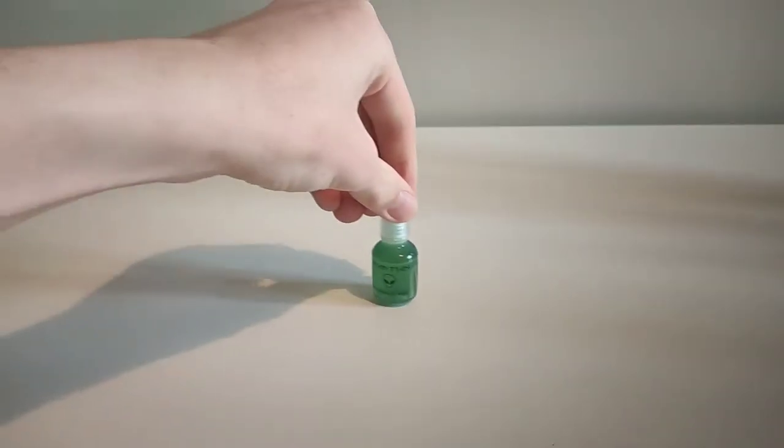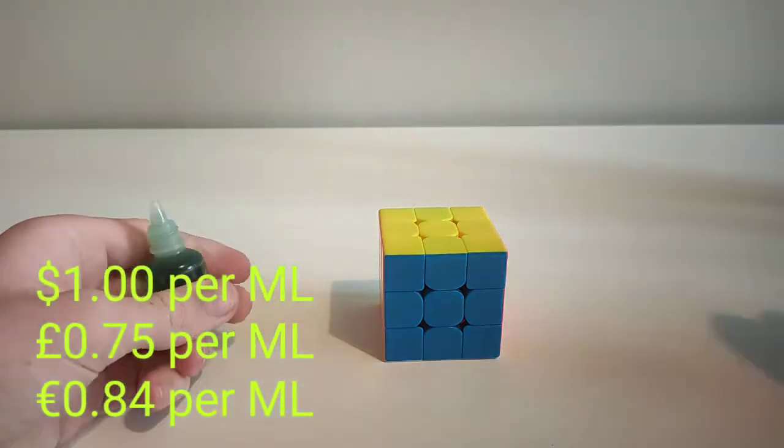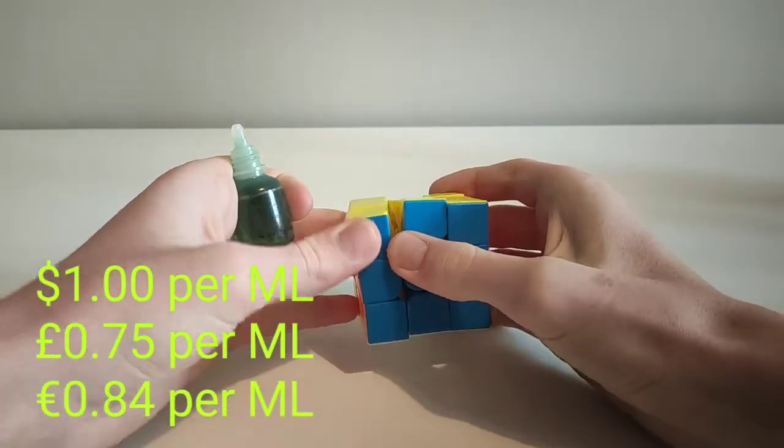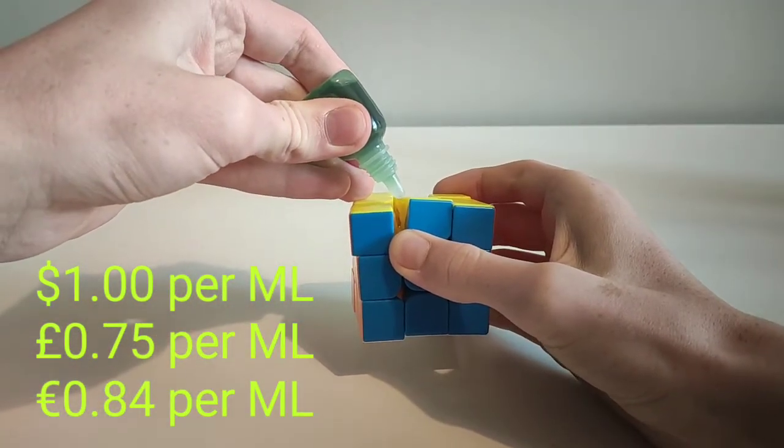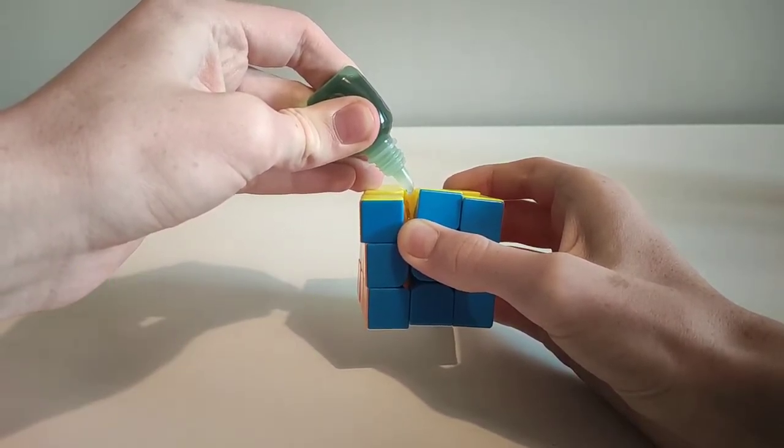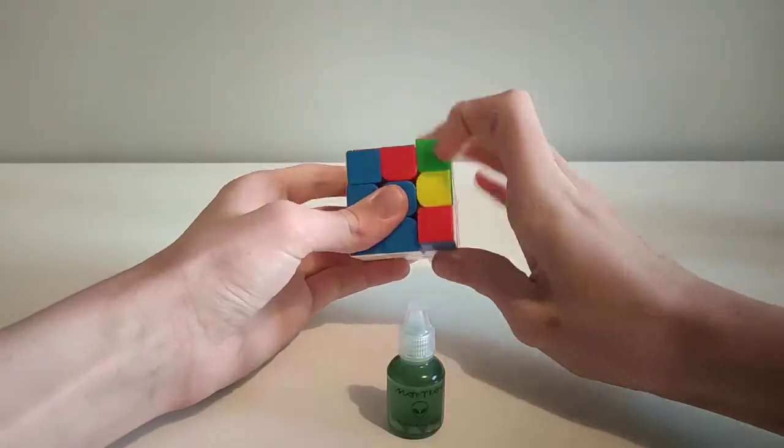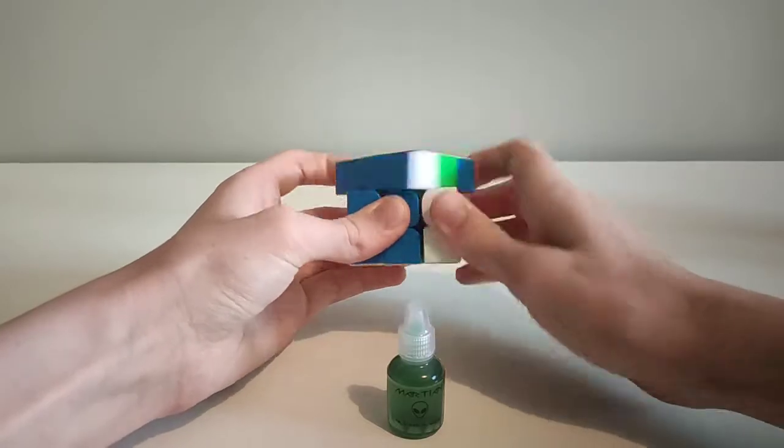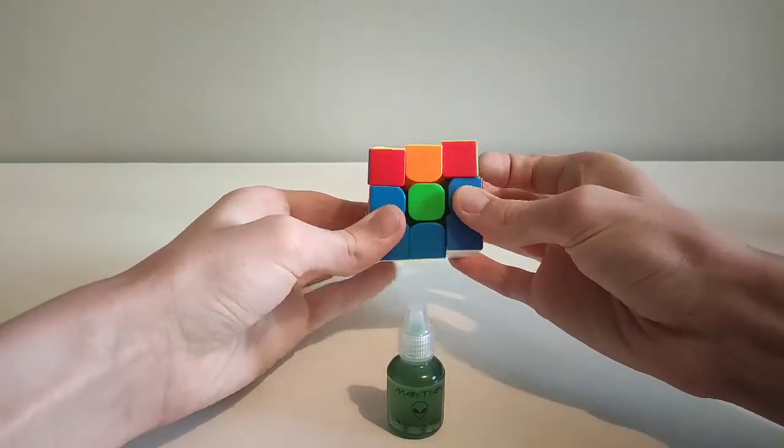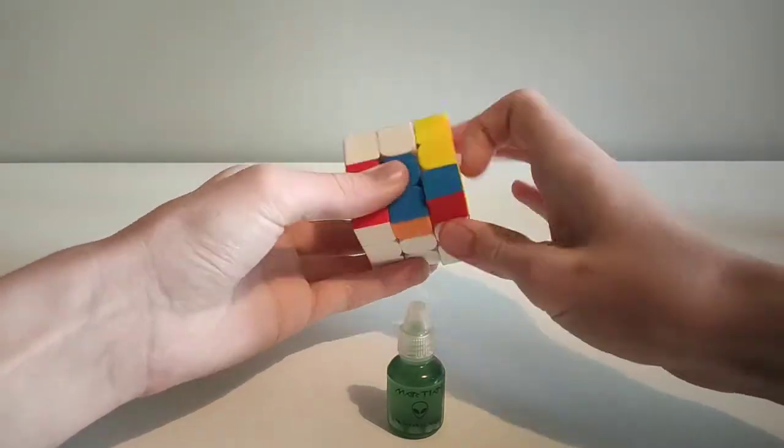Next up we have speedcube shop martian. Speedcube shop martian is the next step from luna. It makes the cube a lot faster, just slightly less than luna, and it also makes the cube slightly smoother than luna does.